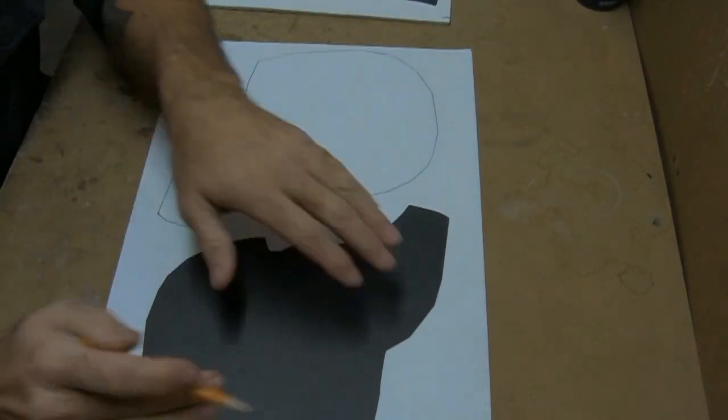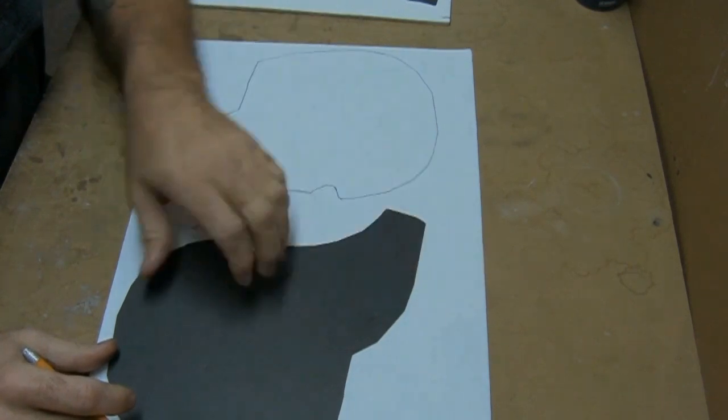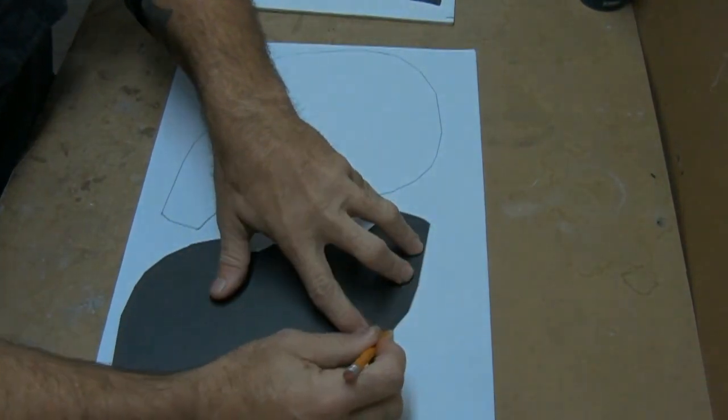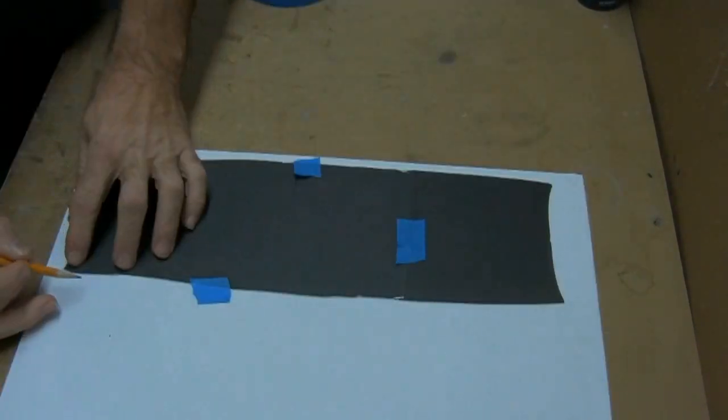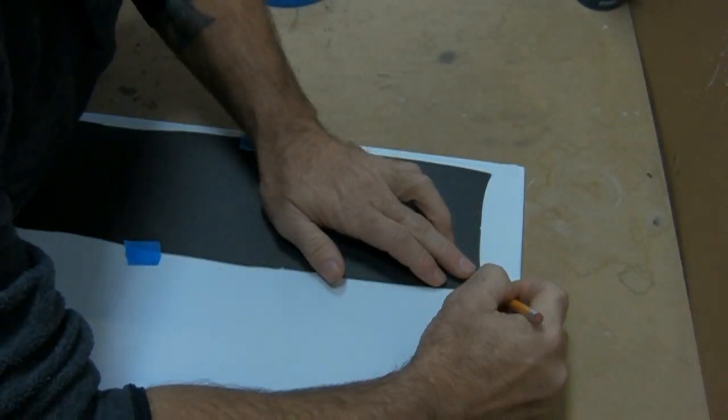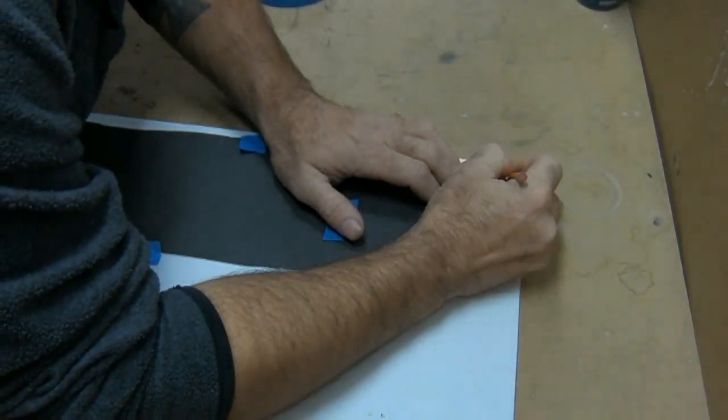Start by tracing the templates onto your 5mm foam. On the template for the top of the helmet add about an inch of length to the back end of it.